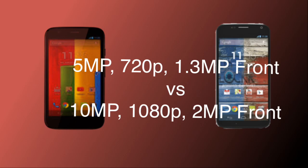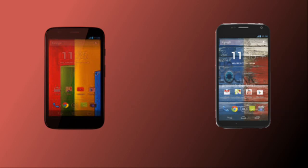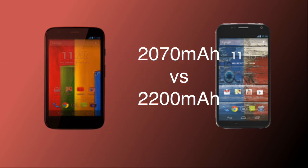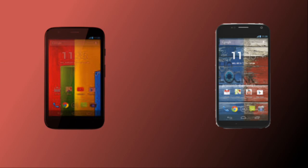In terms of battery, the Moto G comes with a 2,070 mAh battery, while the Moto X comes with a slightly better 2,200 mAh battery.